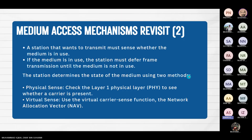A station that wants to transmit must sense whether the medium is in use. If the medium is in use, the station must defer frame transmission until the medium is free. The station determines the state of the medium using two methods: physical sense, which checks the physical layer for a carrier presence, and virtual sense, which uses the virtual carrier sense function known as the Network Allocation Vector (NAV).